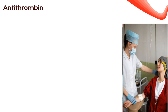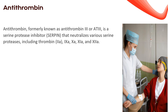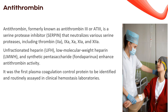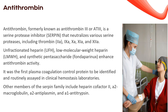Antithrombin — once known as antithrombin-3 or ATIII — is a serine protease inhibitor (serpin family) that neutralizes various serine proteases, including thrombin (IIa), factor IXa, Xa, XIa, and XIIa. Antithrombin's activity is enhanced by unfractionated heparin (UFH), low-molecular-weight heparin (LMWH), and synthetic pentasaccharide (fondaparinux). It holds the honor of being the first plasma coagulation control protein identified and routinely tested in clinical hemostasis laboratories. Other serpins include heparin cofactor 2, α2-macroglobulin, α2-antiplasmin, and α1-antitrypsin.